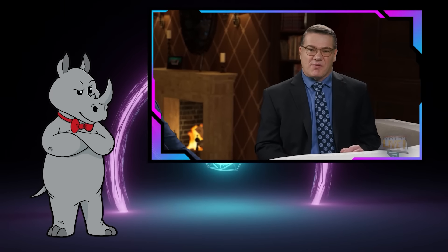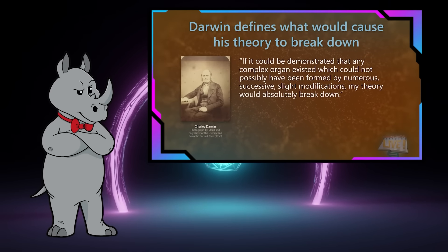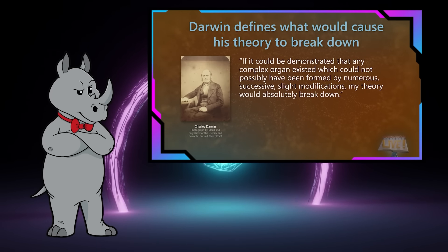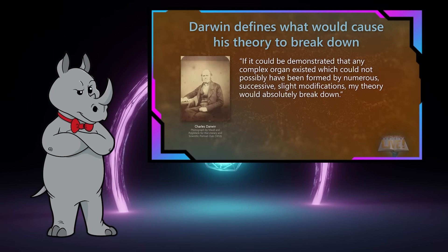Darwin famously admitted: 'If it could be demonstrated that any complex organ existed which could not possibly have been formed by numerous successive slight modifications, my theory would absolutely break down.' And true to creationist form, they've truncated the quote, leaving out some pretty important context. To continue from immediately after they ended it: 'But I can find no such case.'